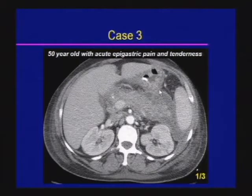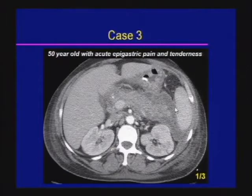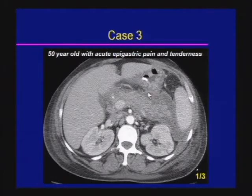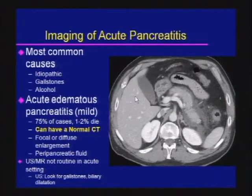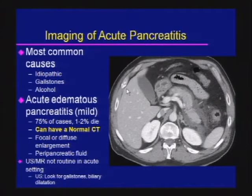Case three: a 50-year-old with acute epigastric pain and tenderness. The pancreas is markedly enlarged with heterogeneity and infiltration into the peripancreatic tissues consistent with acute pancreatitis. The most common causes are idiopathic or gallstones, followed by alcohol, hyperlipidemia, autoimmune pancreatitis, and post-ERCP less commonly.